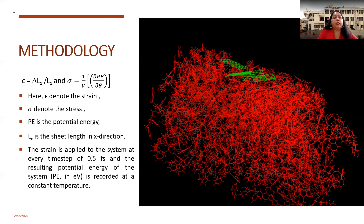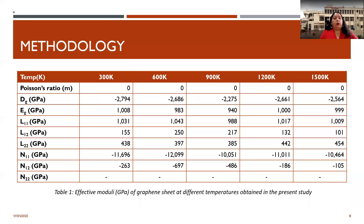In the methodology, the formula for strain is ε = ΔLx / Lx, and stress σ = (1/V)(∂PE/∂θ), where PE is the potential energy, σ is stress, ε is strain, and Lx is the sheet length in the x direction. The strain is applied to the system at every time step of 0.5 femtoseconds and the resulting potential energy of the system is recorded at constant temperature.